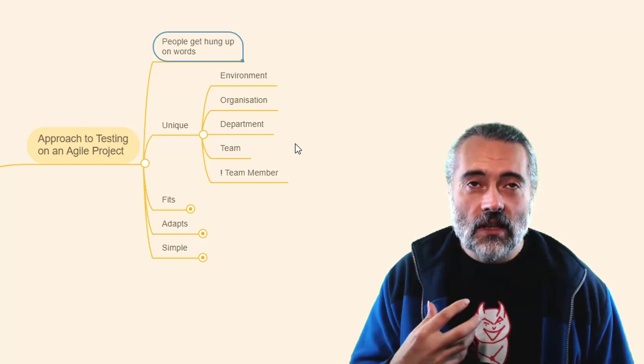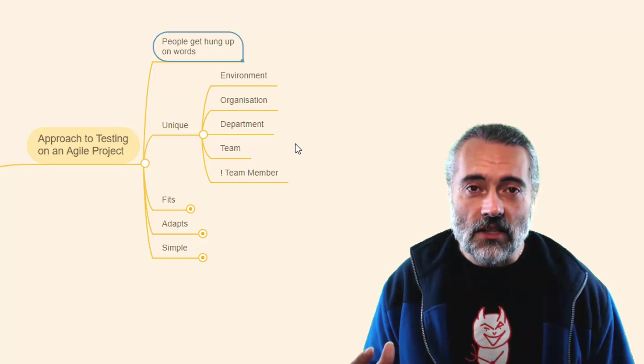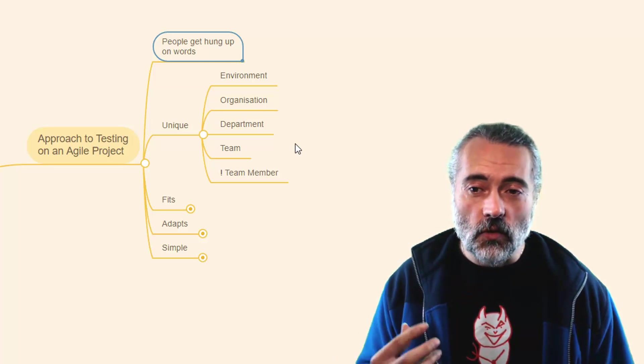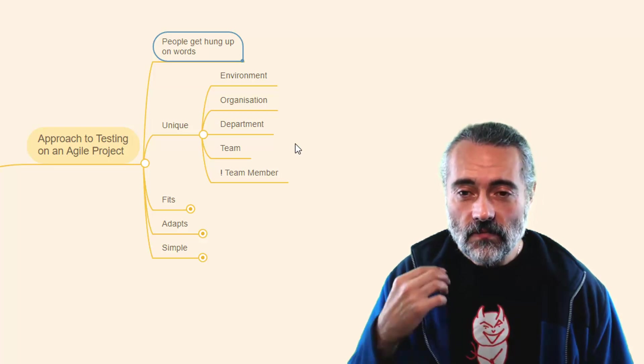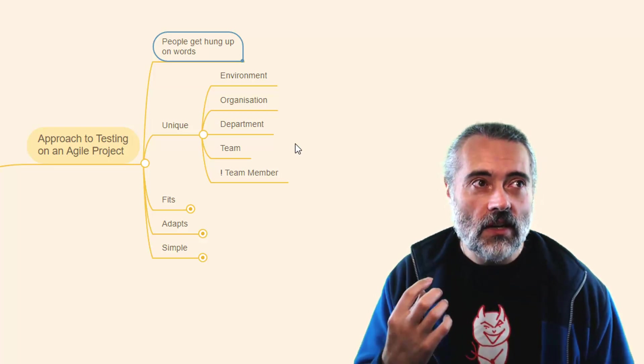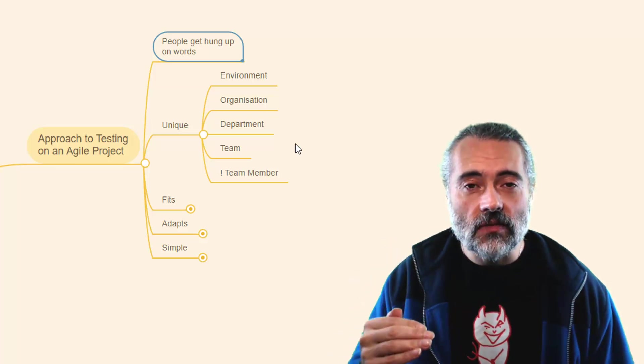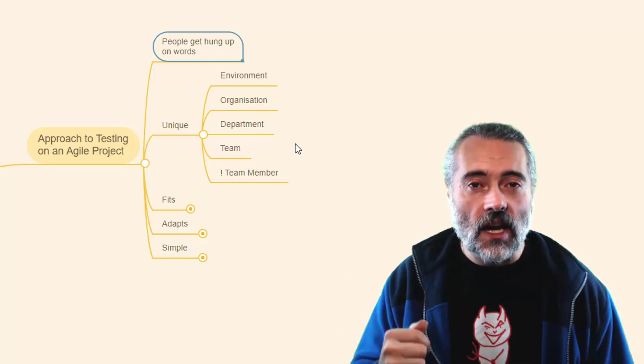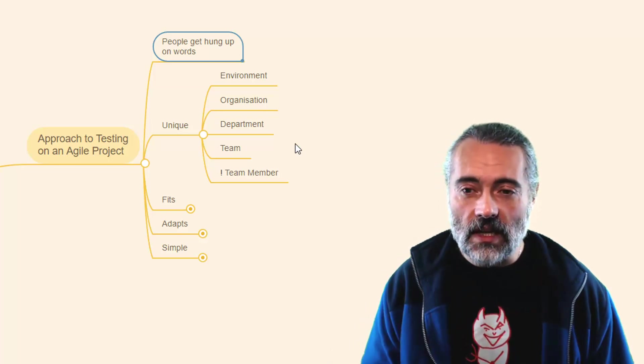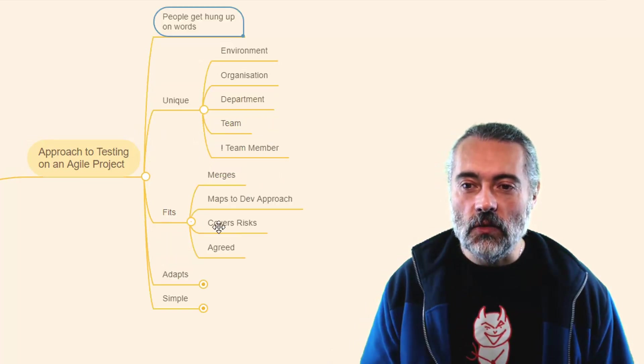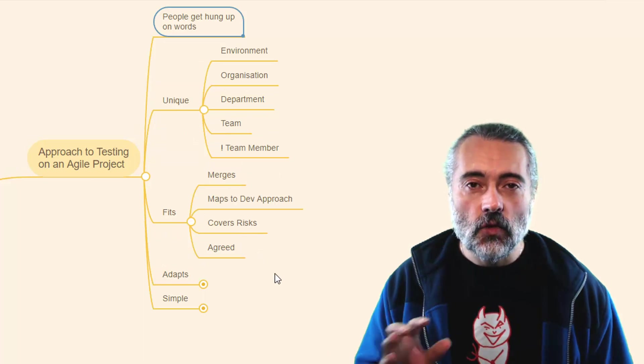Now, the more coherent and consistent an Agile process is, the better it works. So hopefully every team member has the same view, but sometimes they don't. When we approach testing, we are very often just trying to fit into all these different viewpoints on Agile and how it works because we're trying to mitigate risk in different ways. So what we're trying to do is fit in to that process.